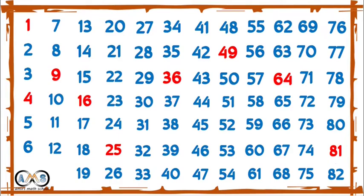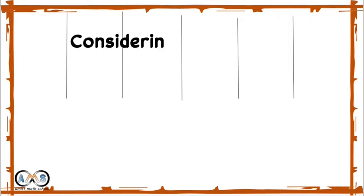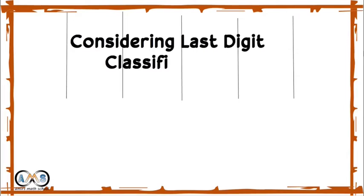These perfect square numbers are the square of some integer number. Let's see some properties of perfect square numbers. First, let's consider the last digit classification — if we classify the square numbers we get 6 classes considering the last digit.